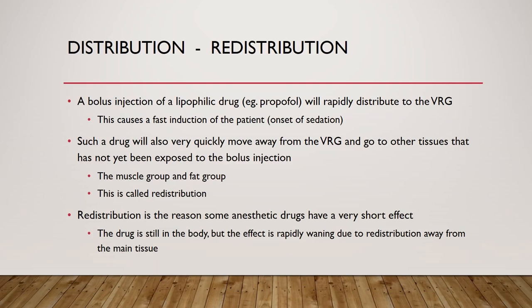Distribution-redistribution is responsible for fast onset and fast offset of a drug. Given a bolus IV injection of a lipophilic drug such as propofol, the drug rapidly goes to the vessel-rich group including the brain, exerts its effect, and the patient goes to sleep — induction. Propofol then quickly moves away from the vessel-rich group and starts distributing to the muscle group and fat group. This rapid movement is called redistribution and is the reason some anesthetic drugs have a very short effect — they move away from the organs where they exert their effect. Since muscle and fat have no sedative effect from propofol, the effect stops very quickly, requiring a continuous infusion to maintain the effect.